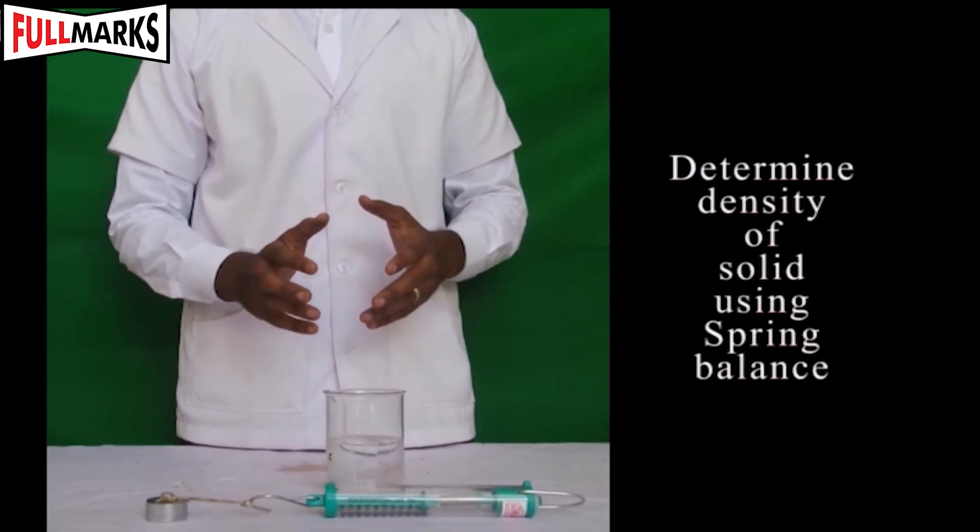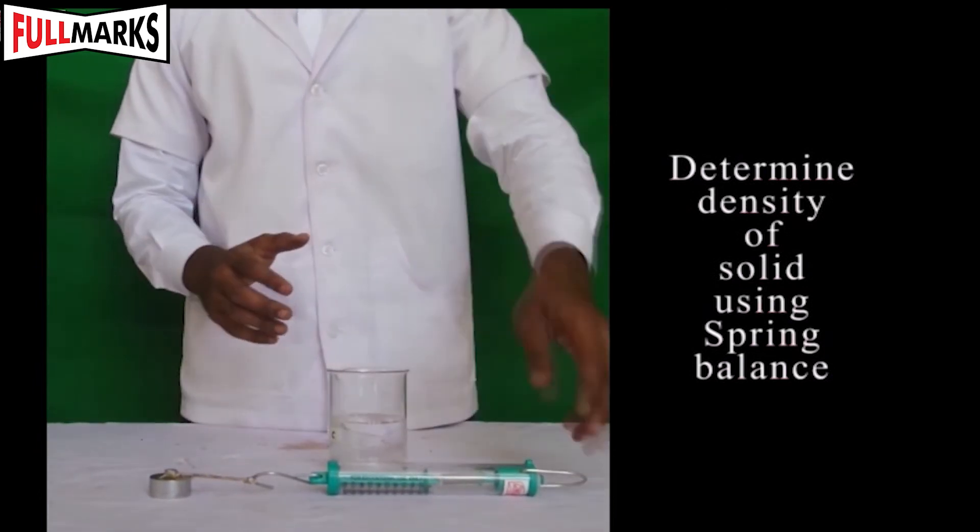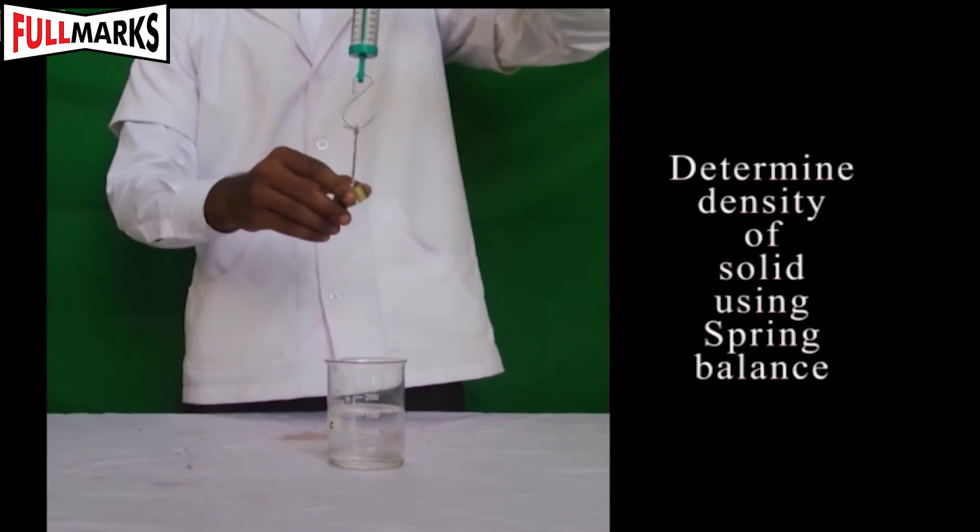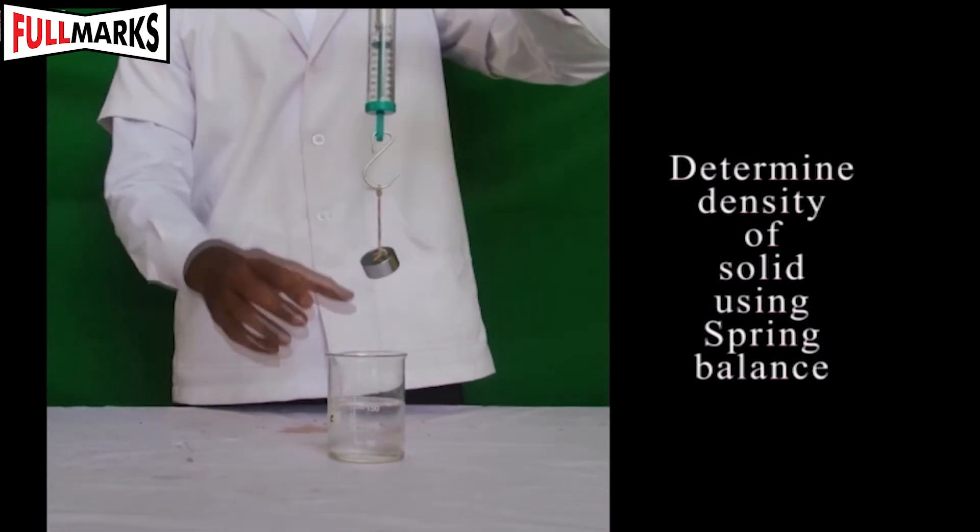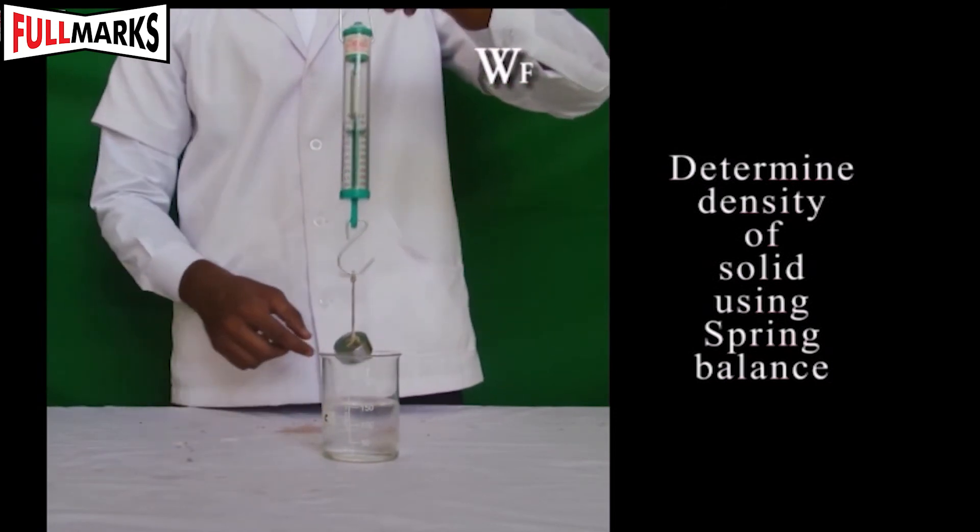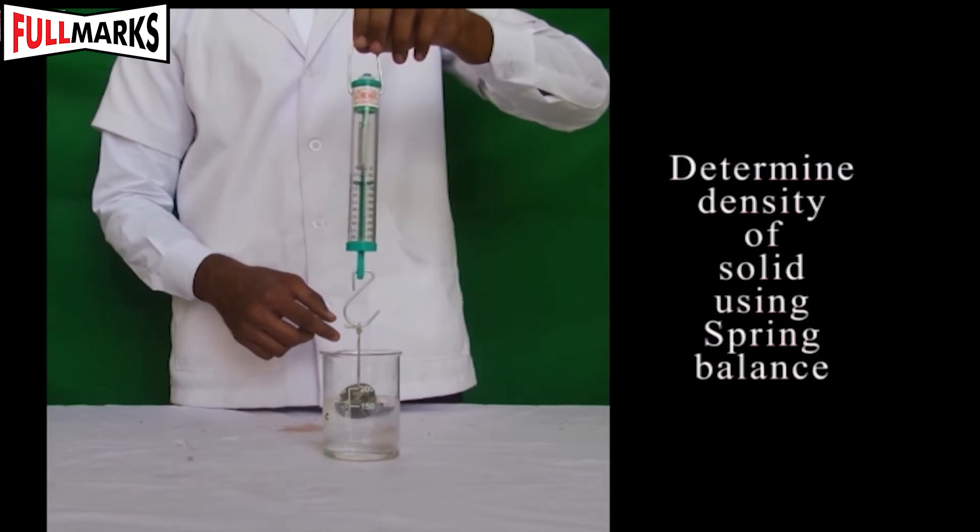Hold the spring balance suspended with a metal bob in air. Measure the weight of the bob. Let its weight be Wf. Pour the water in the measuring cylinder and record the initial volume of water. Let it be V1.